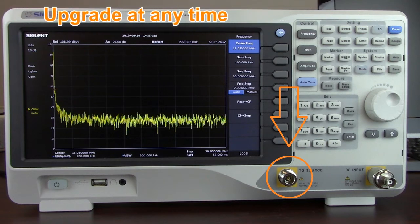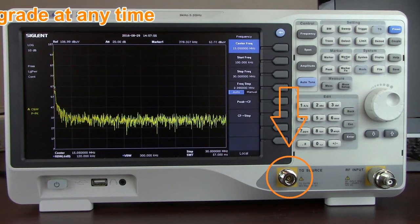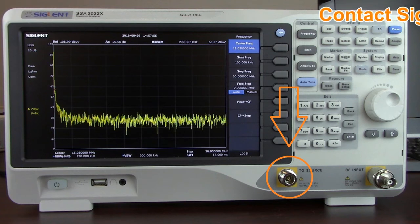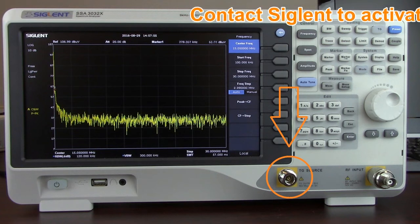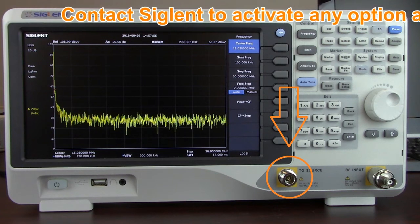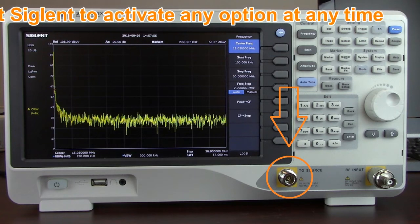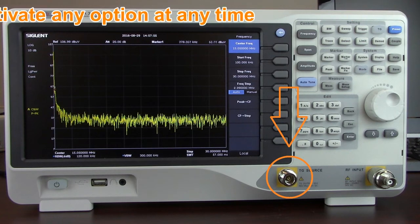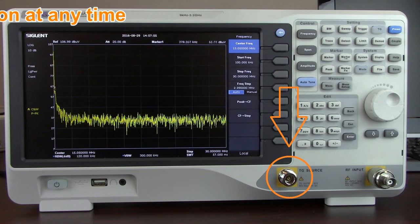Unlike many analyzers, the TG also operates to the maximum frequency of the instrument, not just to 1 GHz. So if you have a 2.1 GHz unit, the tracking generator operates up to 2.1 GHz. That makes the TG option even more powerful, giving you a full bandwidth capability, or full frequency span capability to test your passive and active devices.